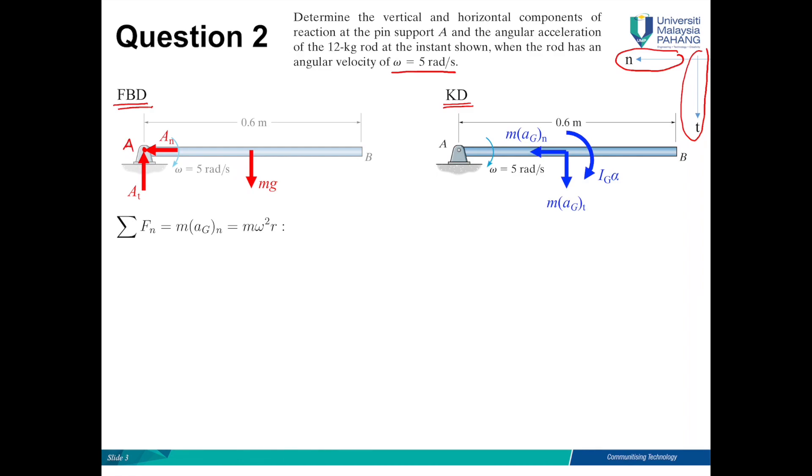In normal axis we have An positive equal to M, 12, omega is 5 squared times R. R is the distance from G to the center of rotation, which is 0.3. So we have An equals 90 Newton.